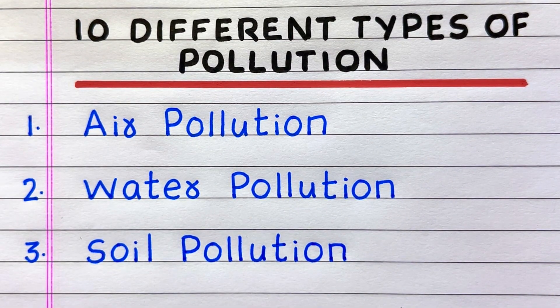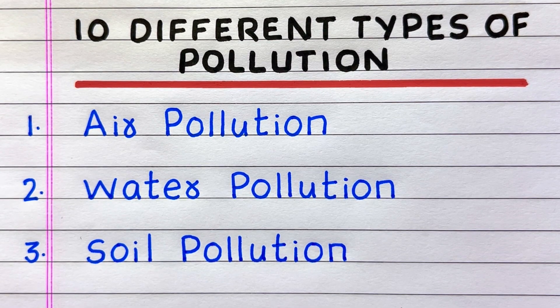The first type of pollution is air pollution. Second, water pollution. Third, soil pollution.